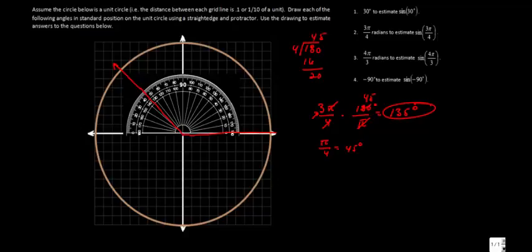And now what I want to do is find the height value because we're looking at the sine function. So we want to find the height value of that green point right there, the intersection of my terminal side and the unit circle.